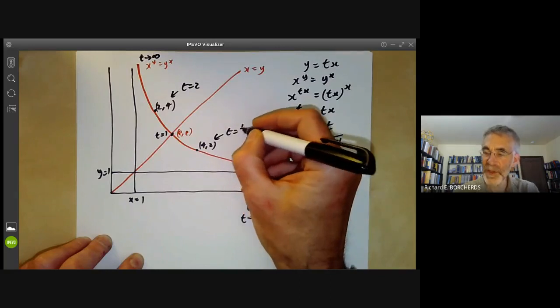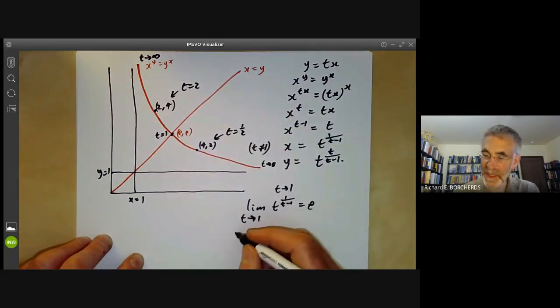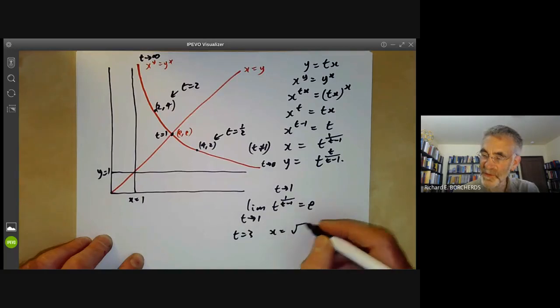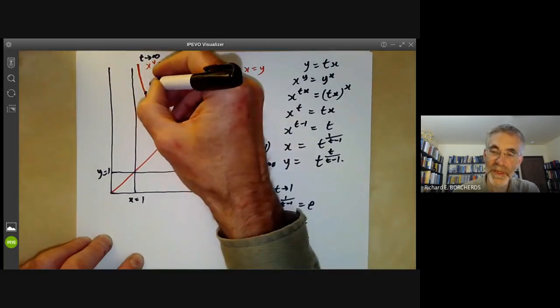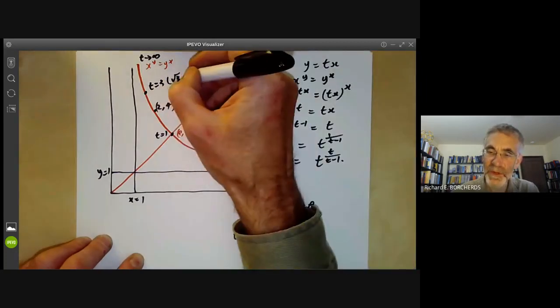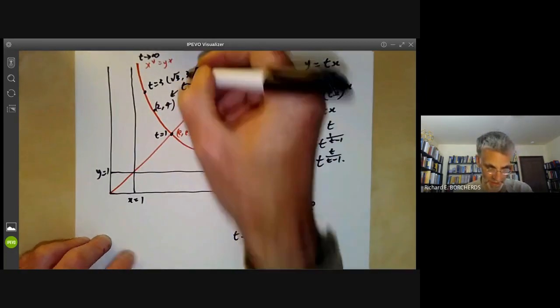This point here is where t equals 2, t equals 1 half. And we can do other things. For instance, if we take t equals 3, we find x is equal to the square root of 3. And y is equal to 3 times the square root of 3. So we get another point here. t equals 3 at the point root of 3, 3 root of 3, and so on.